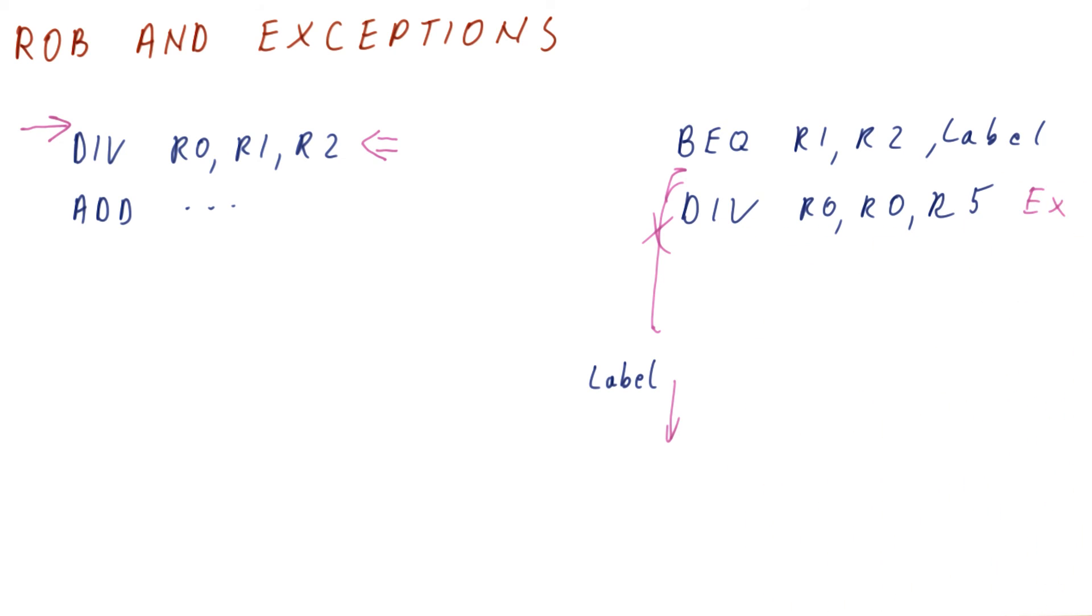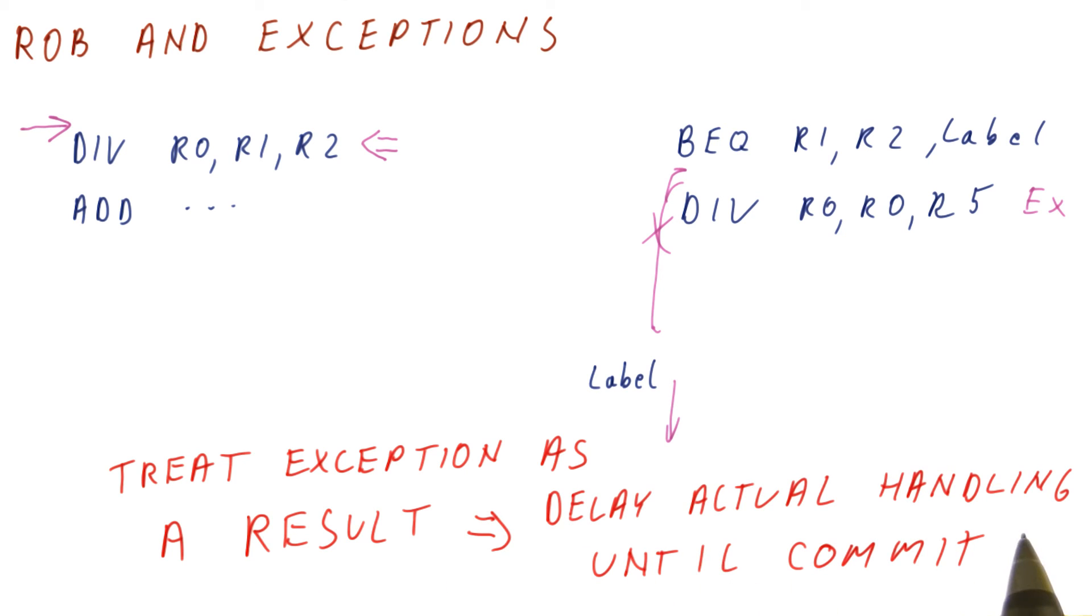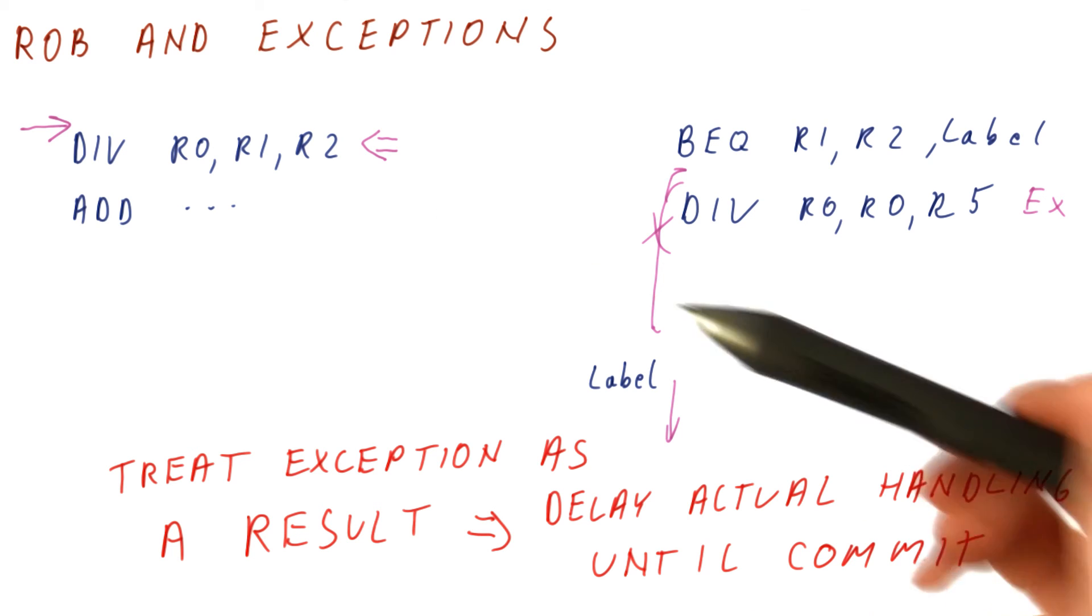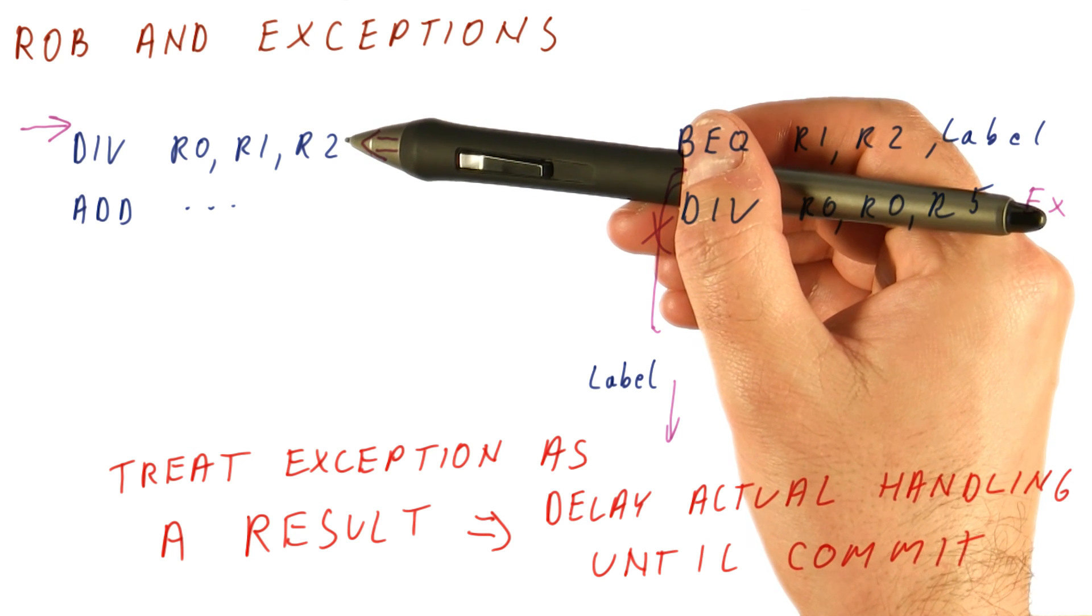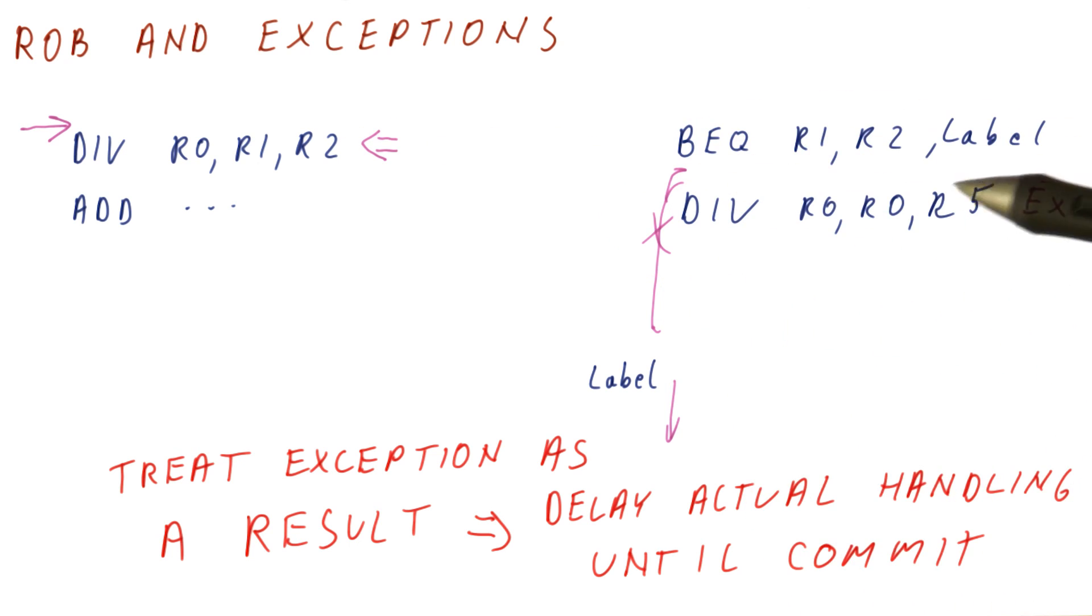Thus the exception is never triggered. The idea with exception handling is simply to treat the exception just as any other result and delay the actual handling of exceptions until the instruction that is triggering the exception commits. At that point, we know exactly what the resume point is for the exception handler, and we won't have any phantom exceptions because we would never reach the commit of this divide unless it was on the correct path for all the branches. If there was a misprediction, we would have canceled this divide long before it reaches the commit point.